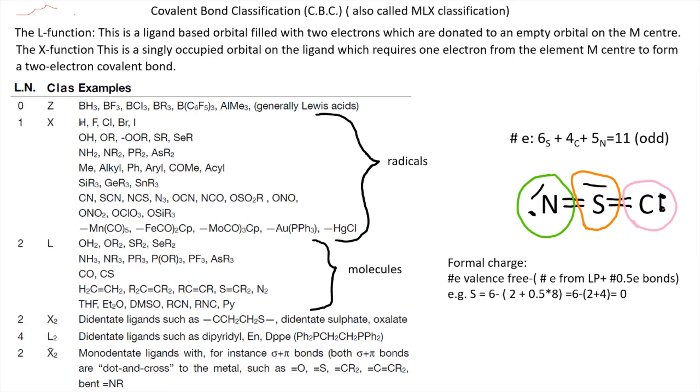Basically, X ligands are neutral radicals and L ligands are neutral molecules. For instance, if you get some ligand that you don't know at the exam, like N, S, C, then you just take the number of electrons from the periodic table: 6, 4, 5, which gets you 11 electrons in total. That's an odd number, so it's an X ligand.